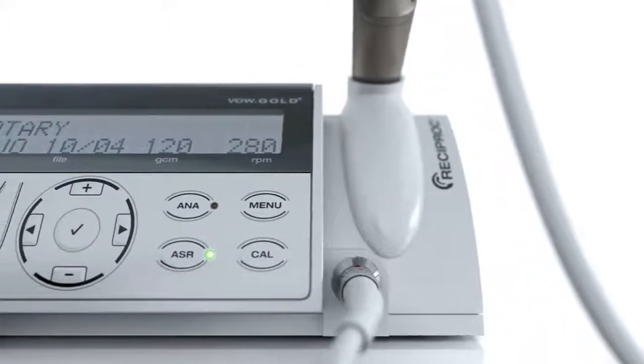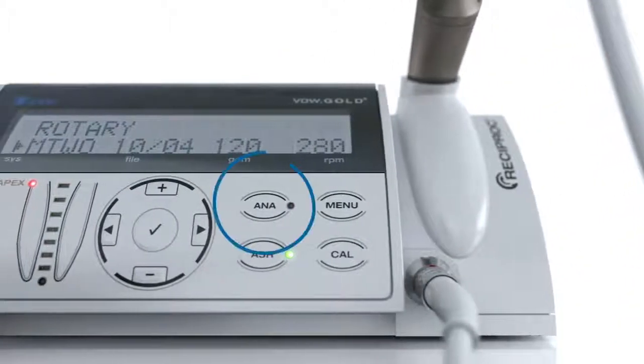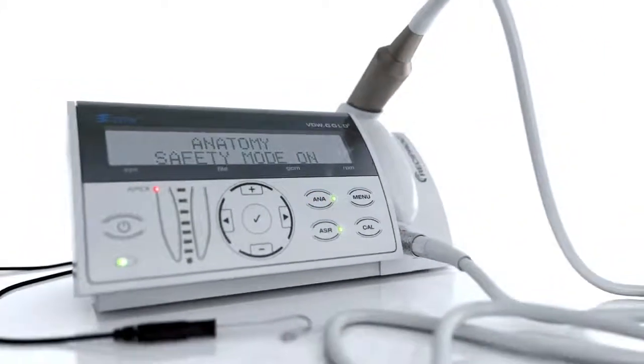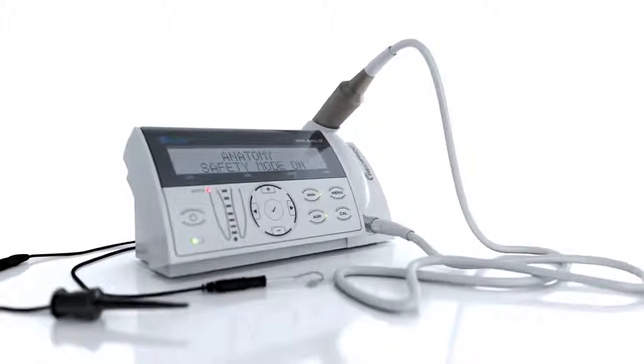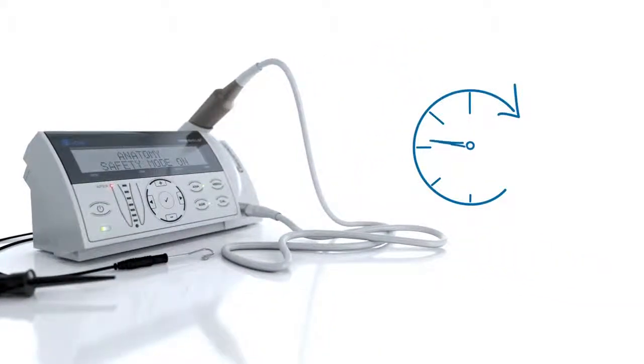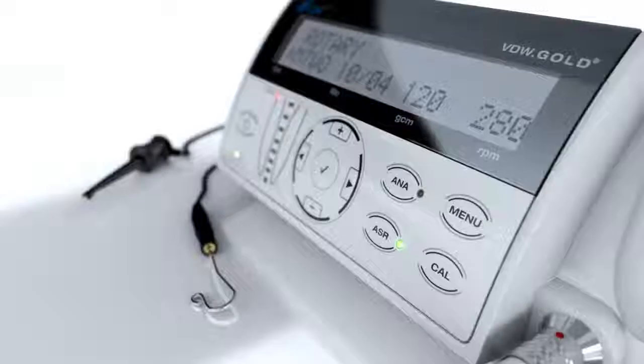The second safety function for rotary file systems is activated by the ANA key. The abbreviation ANA stands for the word anatomy. When the ANA key lights green, all torque values are lowered. This can be helpful when preparing difficult canal anatomies.